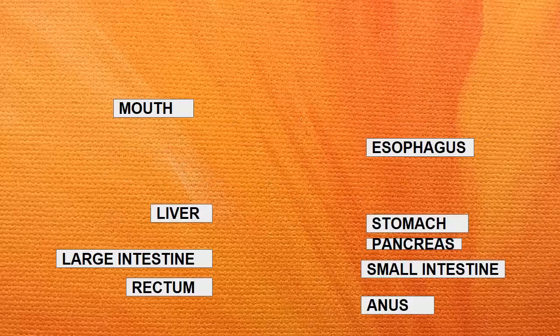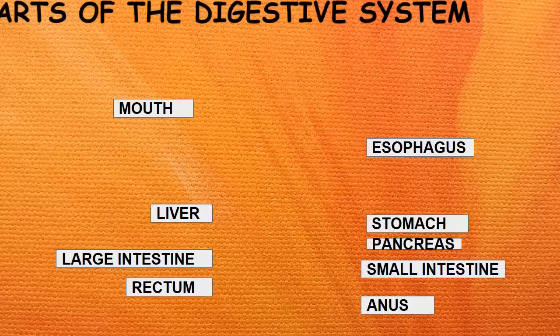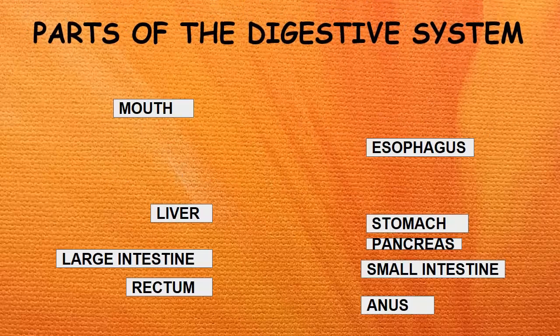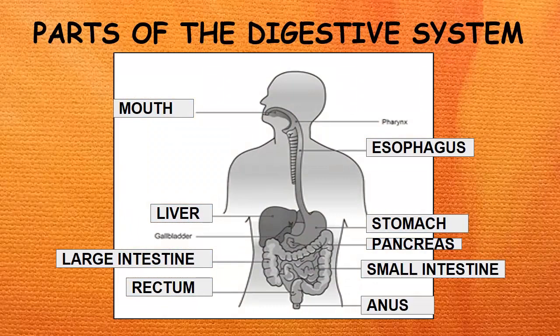Here are the parts of the digestive system: the mouth, esophagus, the liver, stomach, pancreas, small intestine, large intestine, rectum, and anus.